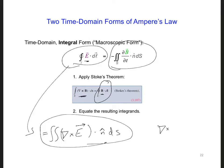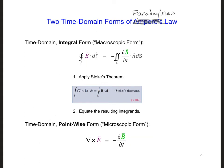We can say the curl of E is equal to minus dB/dt. And what we obtained is the time-domain pointwise form or microscopic form of Faraday's law.